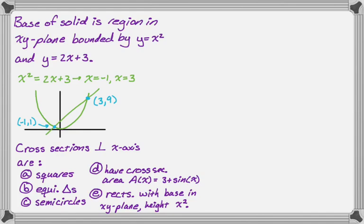Cross sectional area A of x is 3 plus sine of x, which is the weirdest type of problem but by far the easiest one to do. And then in part E, we're going to have rectangular cross sections with the base in the xy-plane, and then we're just told that the height is equal to x squared.